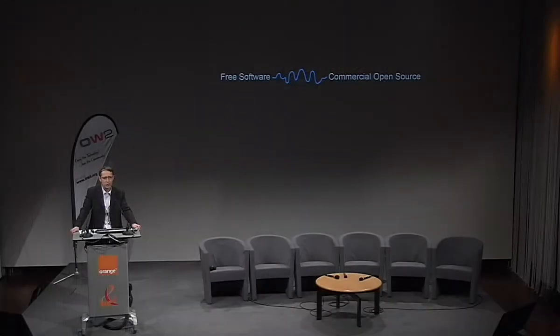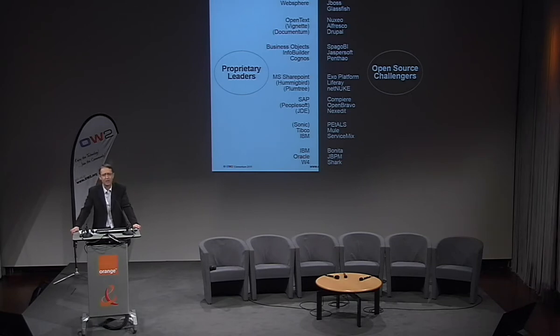These four freedoms have had the power to change the way the software industry is operating. That defines free software, and free software has evolved through various ways into what we call commercial open source. Commercial open source is now taking market shares in the software industry, to the point that in any product category defined by proprietary vendors, the whole market is shifting to open source. These product categories are now being emulated, reproduced, and developed under new rules by open source software vendors.